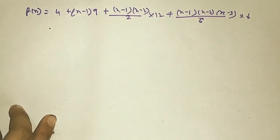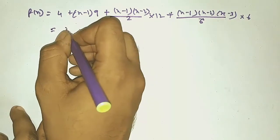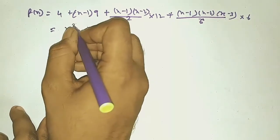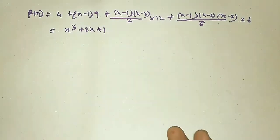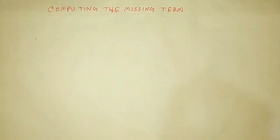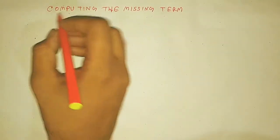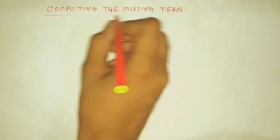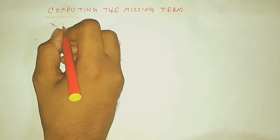Now we substitute the values of f(X₀), Δf(X₀), Δ²f(X₀), and Δ³f(X₀) from the difference table. After solving, we get x³ + 2x + 1. That was the finding polynomial problem.